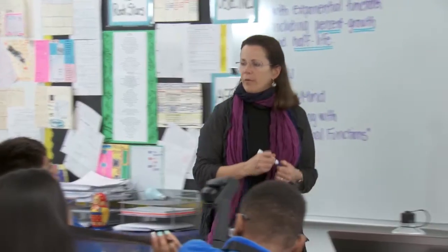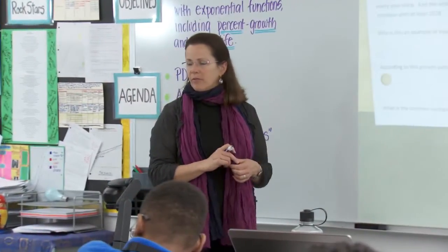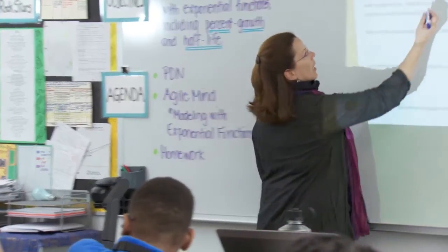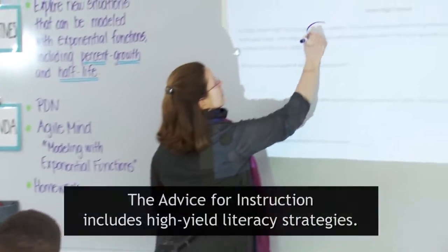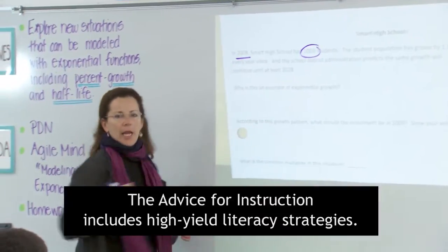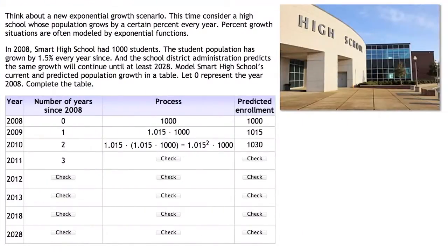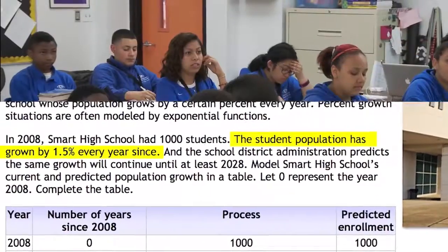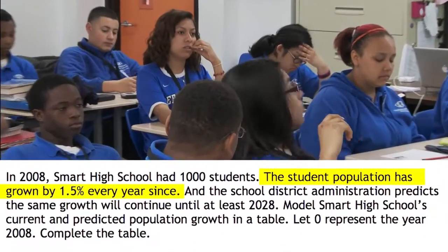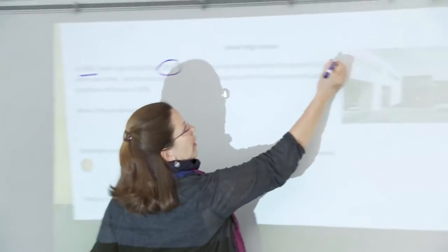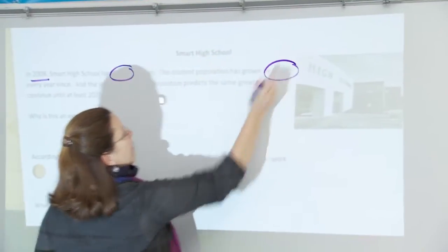Excellent. And, Portia, give me one piece of information that's important from this problem. In 2008, Smart School had a thousand students. Okay, so we are starting out with 1,000 students in the year 2008. And, Stephanie, another important piece: the population of students grows by 1.5% every year. Excellent — so we have a growth rate of 1.5%.